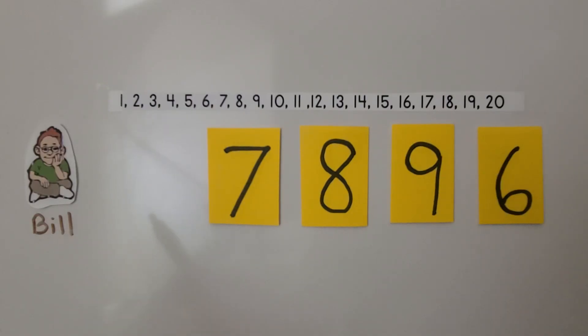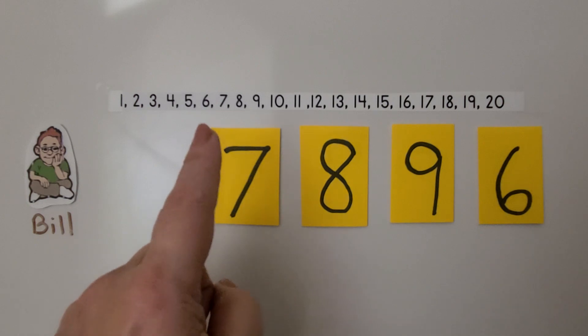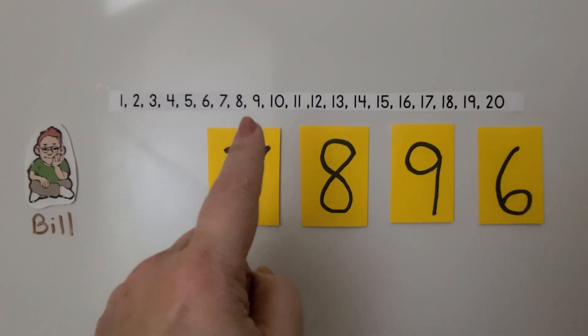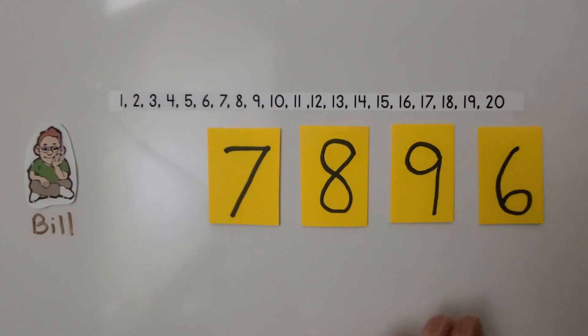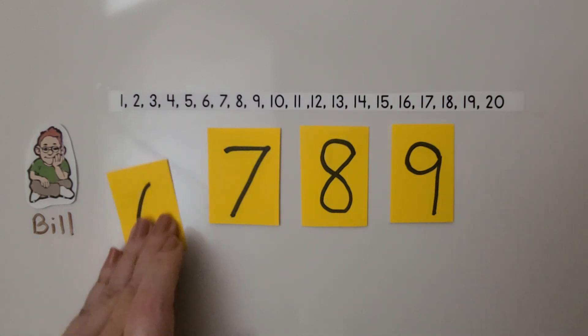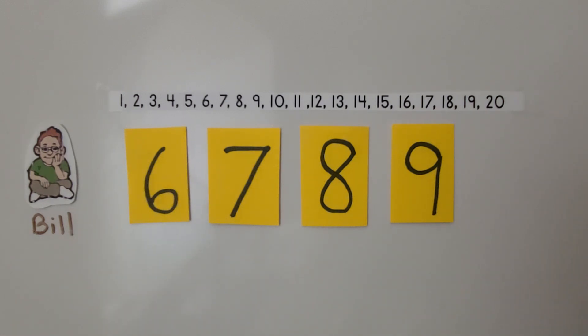Here's Bill. Bill made cards for 7, 8, 9, and 6. He wants to show the cards in order. That means he needs to put them in counting order. When we count, we say 6, 7, 8, 9. That means the 6 is going to come before the 7 for counting order. Now they're in counting order.